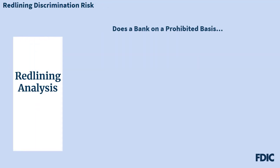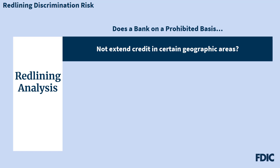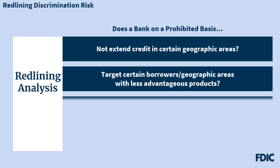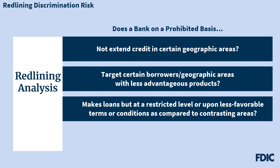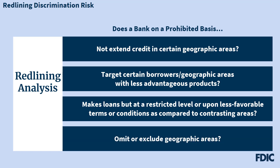A redlining analysis for a bank may be applied to determine whether, on a prohibited basis, a bank does not extend credit in certain geographic areas, or a bank targets certain borrowers or certain geographic areas with less advantageous products. It may determine whether a bank makes loans in such an area but at a restricted or lower level, or upon less favorable terms or conditions as compared to contrasting areas. A redlining analysis also helps determine whether a bank omits or excludes such an area from efforts to market residential loans or solicit customers for residential credit.